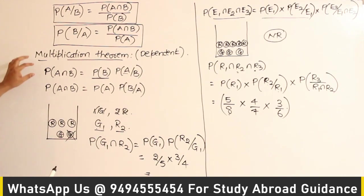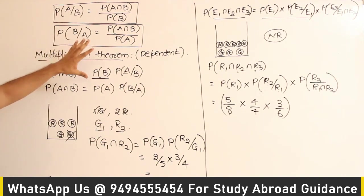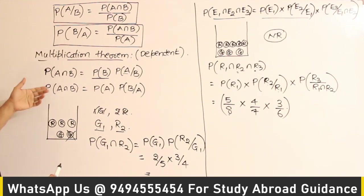So the final answer uses this chain: 5/8 times 4/7 times 3/6. This is also sometimes called the chain rule, because we chain all the events together. This is an example of using the multiplication theorem on dependent events.